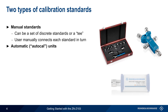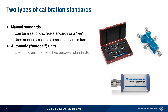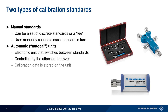The other type is automatic calibration or Auto-Cal units. These are electronic units that switch between a set of internal standards, and this switching is controlled by the connected analyzer. In addition, calibration data is stored on the units and can be read out by the attached analyzer as well.